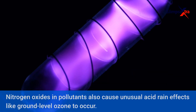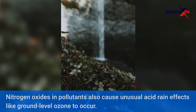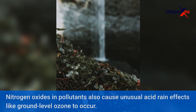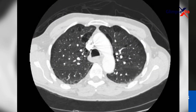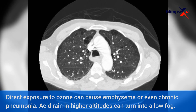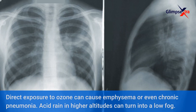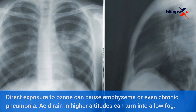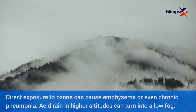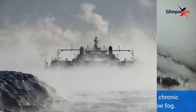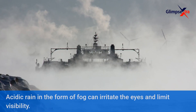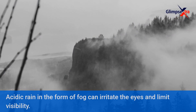Nitrogen oxides and pollutants also cause unusual acid rain effects like ground-level ozone to occur. Direct exposure to ozone can cause emphysema or even chronic pneumonia. Acid rain in higher altitudes can turn into a low fog, which can irritate the eyes and limit visibility.